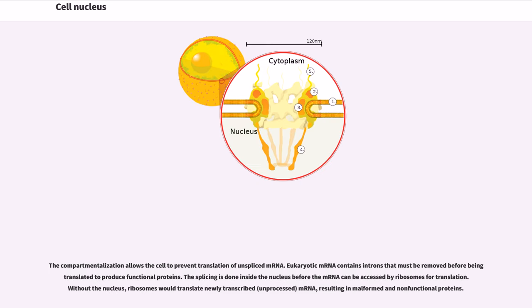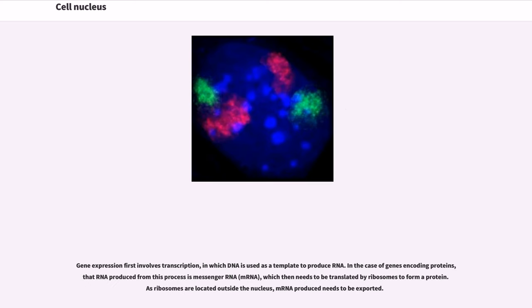The compartmentalization allows the cell to prevent translation of unspliced mRNA. Eukaryotic mRNA contains introns that must be removed before being translated to produce functional proteins. The splicing is done inside the nucleus before the mRNA can be accessed by ribosomes for translation. Without the nucleus, ribosomes would translate newly transcribed, unprocessed mRNA, resulting in malformed and non-functional proteins. Gene expression first involves transcription, in which DNA is used as a template to produce RNA. In the case of genes encoding proteins, that RNA produced from this process is messenger RNA, mRNA, which then needs to be translated by ribosomes to form a protein. As ribosomes are located outside the nucleus, mRNA produced needs to be exported.